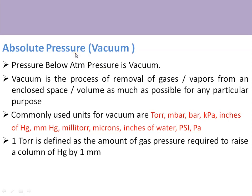Vacuum is always specified in absolute pressure. Pressure below the atmospheric pressure is known as vacuum. Vacuum is generated for a number of applications in industries — for example, semiconductor industries, food packing industries, or chemical industries — where vacuum needs to be generated, maintained, controlled, and measured.